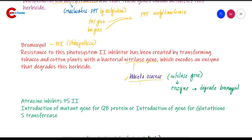Next is atrazine, another herbicide that also inhibits photosystem 2, meaning it inhibits photosynthesis. More specifically, atrazine inhibits the QB protein. To develop resistance, we can introduce a mutant gene for the QB protein or introduce a gene for glutathione S-transferase.